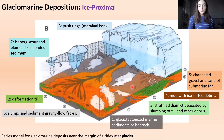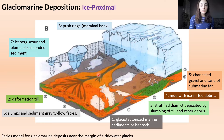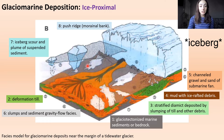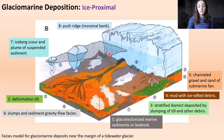Number six is slumps and sediment gravity flow deposits. Number seven is iceberg scour marks and plumes of suspended sediment around icebergs — sediment melting out of the icebergs and being disturbed at the basin bottom and suspended into the water column. Number eight is a push ridge or morainal bank at the front of the glacier, where the glacier pushes sediment forward when it advances and leaves behind this morainal bank when it retreats.